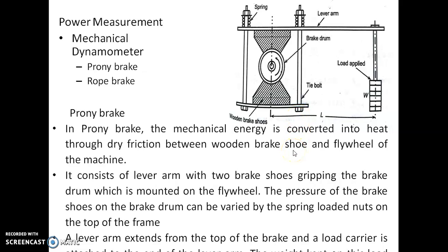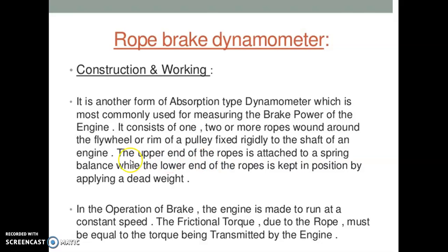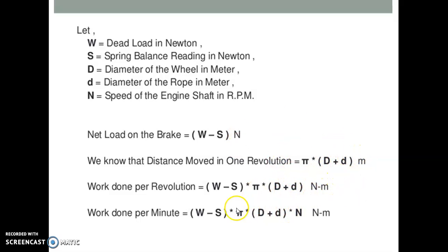In the rope brake dynamometer, ropes are wound around the brake drum. One end of the rope is connected to the spring balance, and the other end is connected to the dead weight carrier. The load = (W - S) Newtons, where W is dead weight and S is spring balance reading. Work done per revolution = (W - S) × π × (D + d). This gives the torque, and from torque, power can be found using P = 2πND/60.